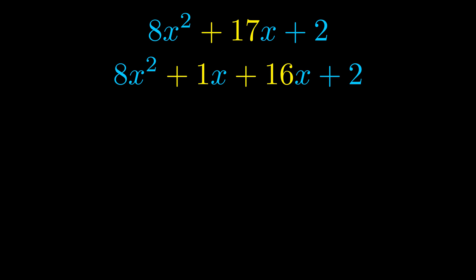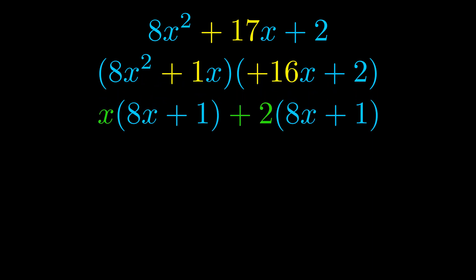Once we've done this, we go ahead and we put parentheses around the first term and the last term. And we do that so that we can take the greatest common factor out of both terms. We can see the greatest common factor is now outside in green.